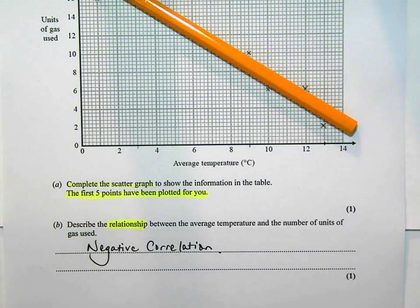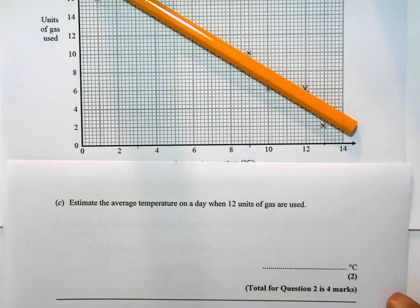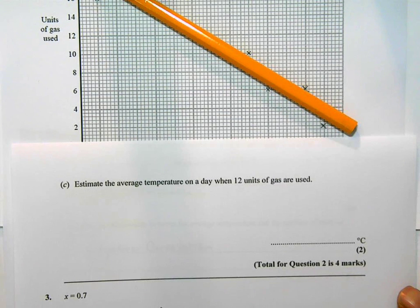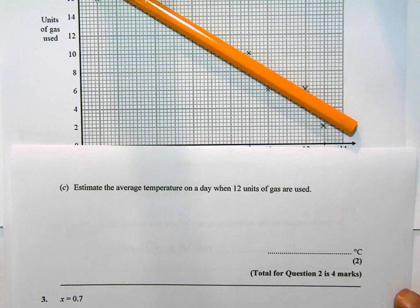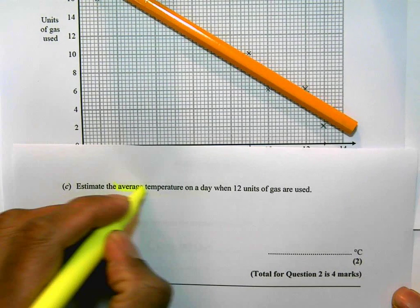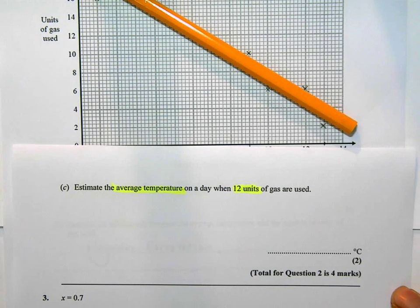We're going to look at the last part of this question, part C, which is on the next page. I'm just going to slip in that part over here. It says estimate the average temperature on a day when 12 units of gas are used.